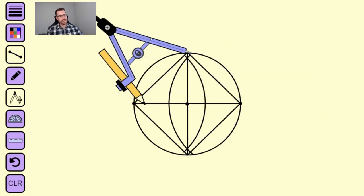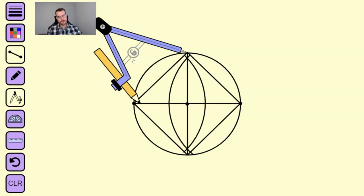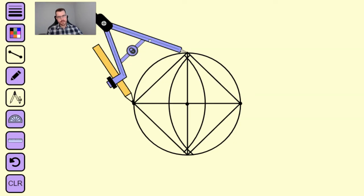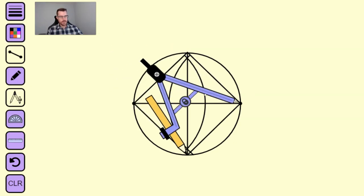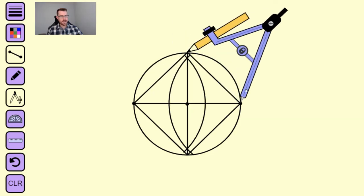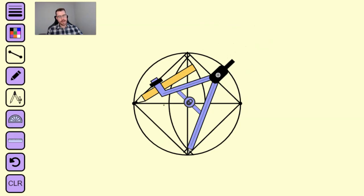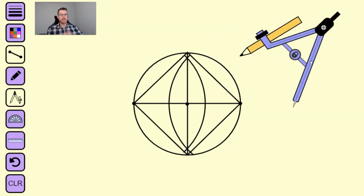To verify this, we can measure to make sure the sides have the same lengths. Here's the length of that side, which should be the exact length of this side. If I rotate around, that's the length of that side, and it's the same as this side. You've constructed a perfect square inscribed in your circle.